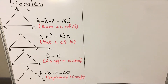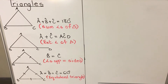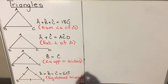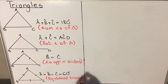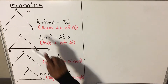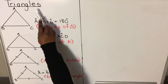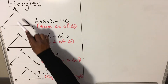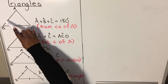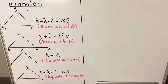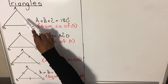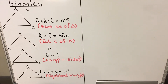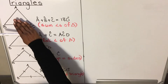This is a lesson on triangles. A triangle is a shape that has three angles — that angle, that angle, and that angle. So that shape will be made of three sides, and it will also be a two-dimensional shape, which means it's a flat shape.